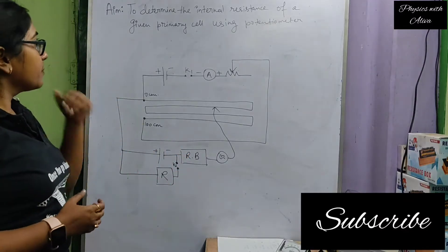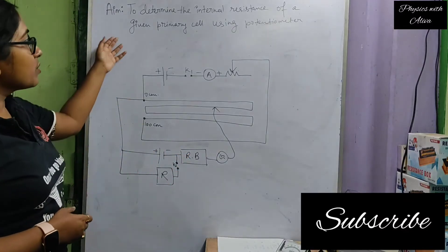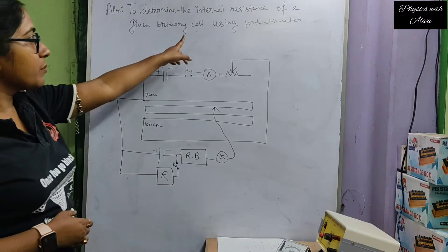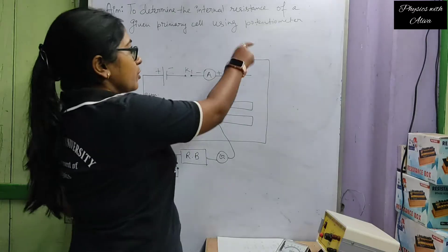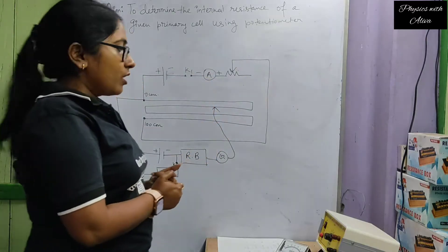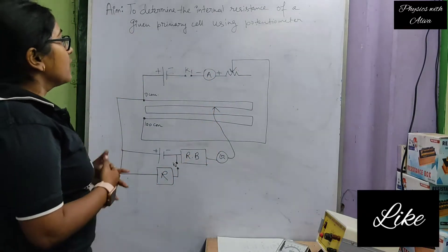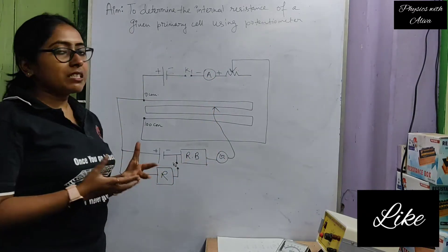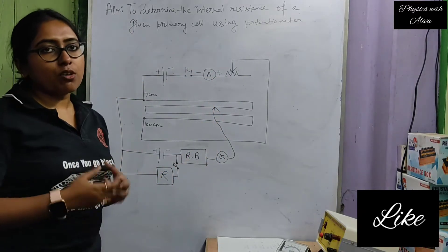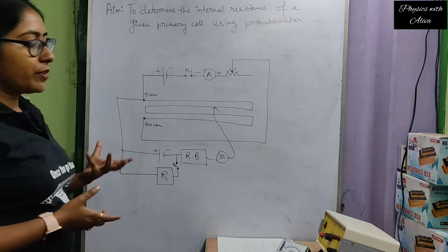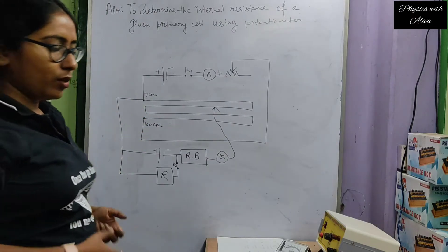In this video, the aim of the practical is to determine the internal resistance of a primary cell using a potentiometer. Using the potentiometer, we will determine the internal resistance of a battery or a primary cell.